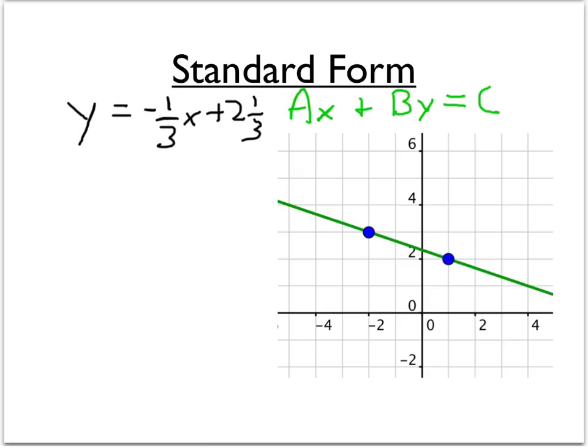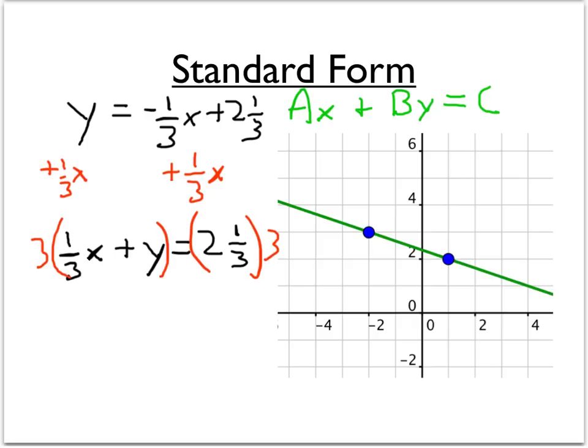So as it stands right now, we've got y on one side of the equation and x on the other side. Let's fix that and add the opposite, add 1 third x to both sides of the equation. And now remember these coefficients have to be integers. Coefficients are the numbers a, b, and c. Here I've got 1 third, here I have 2 and 1 third, and neither of those are integers. So I'll need to multiply both sides of the equation by the denominator. Here I've got 3, I've also got 3. So if I multiply both sides of the equation by 3, then those fractions will become integers.